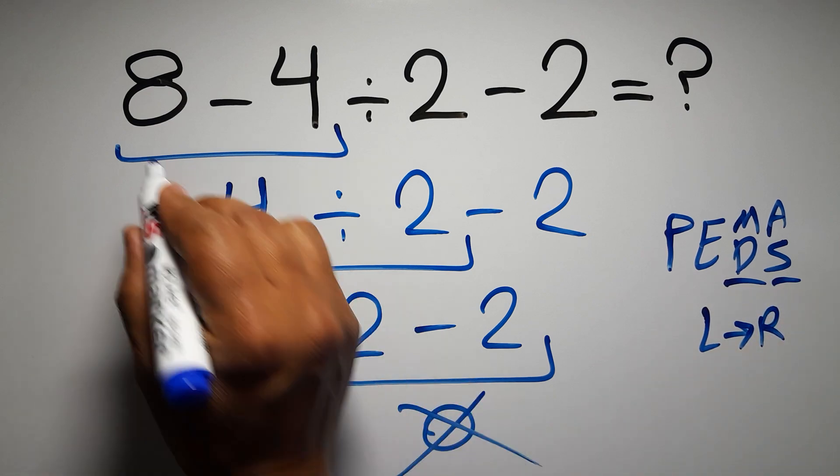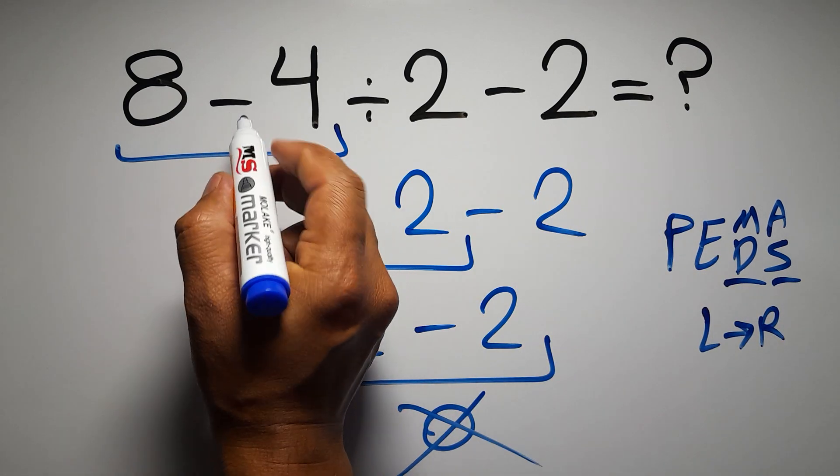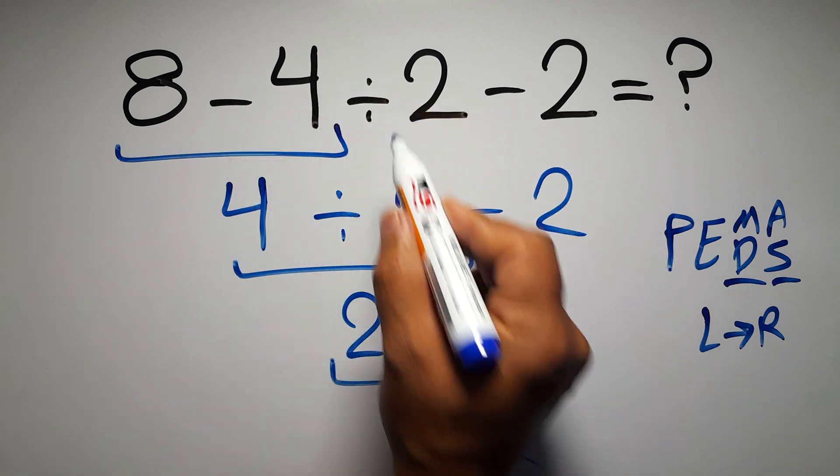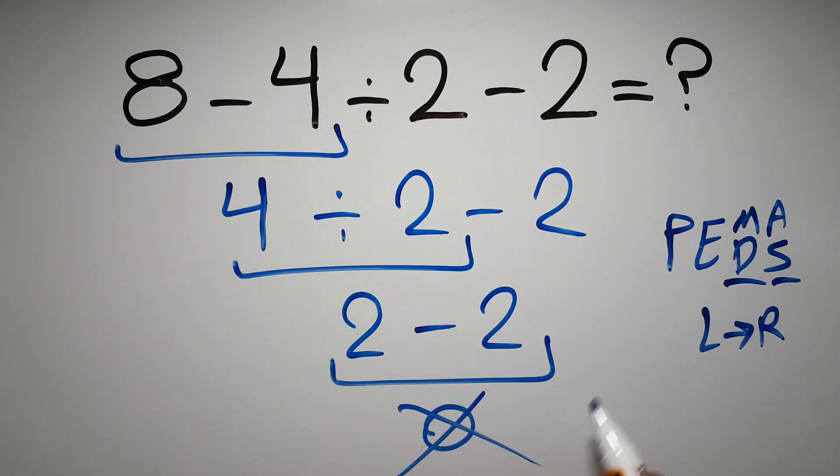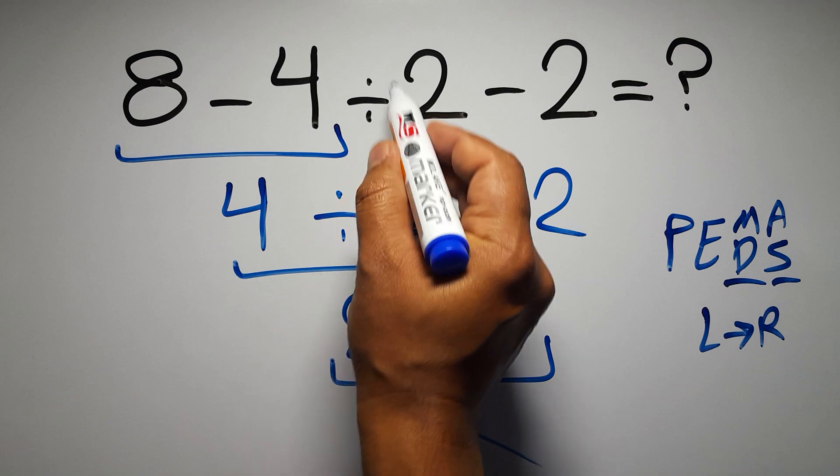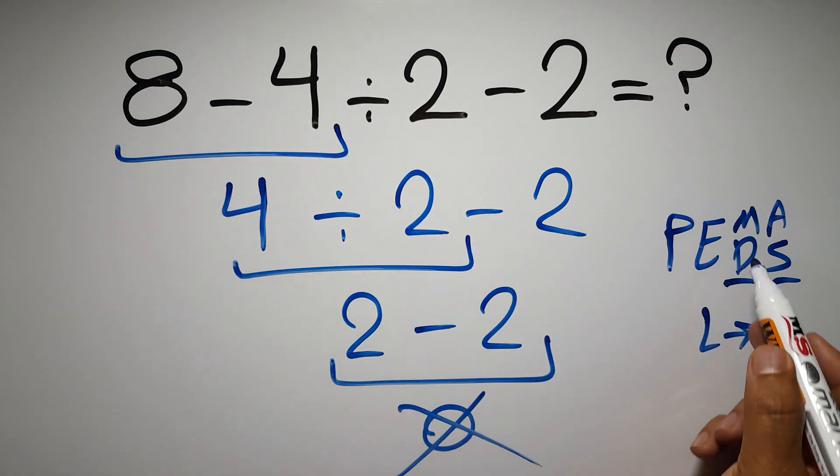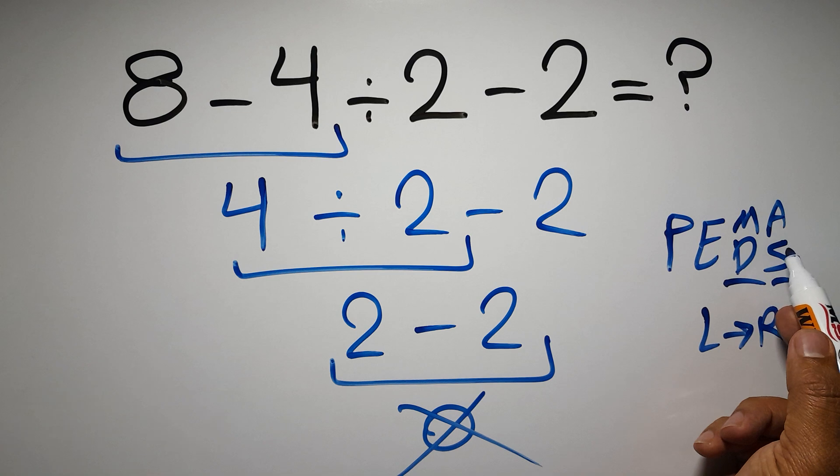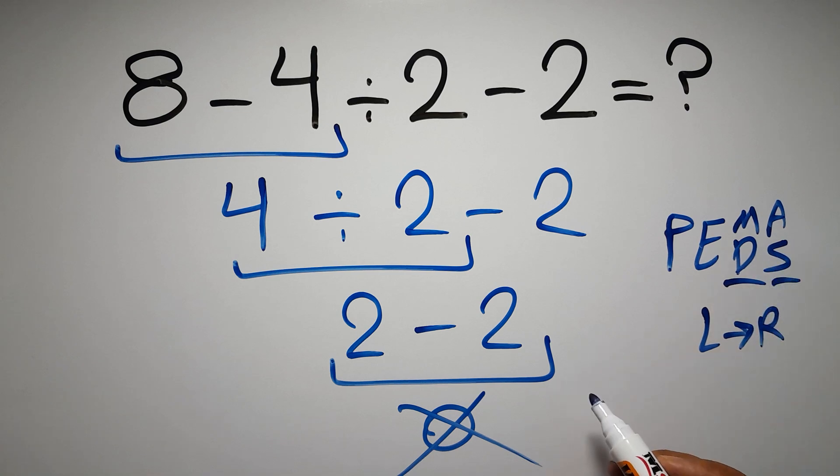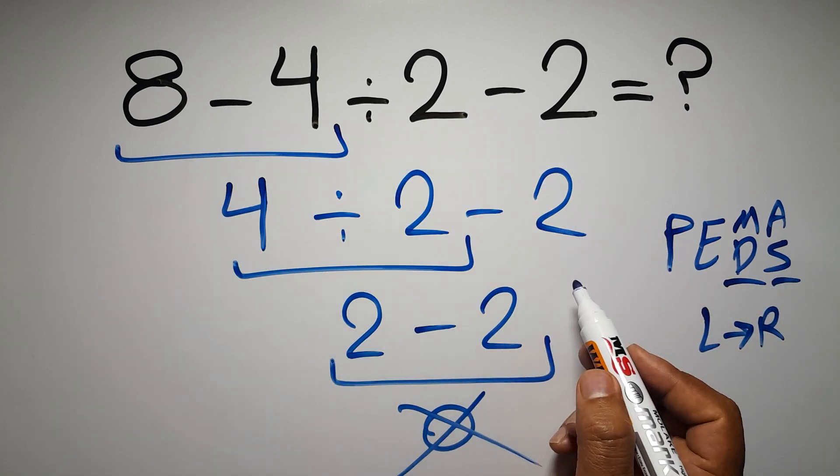In this expression we have two subtractions and one division. According to PEMDAS, division has higher priority than subtraction because division comes before subtraction. So here first we have to do this division.